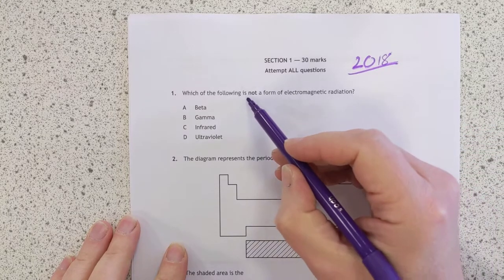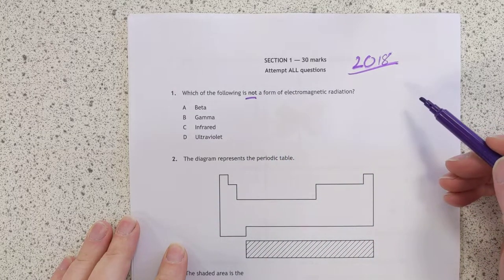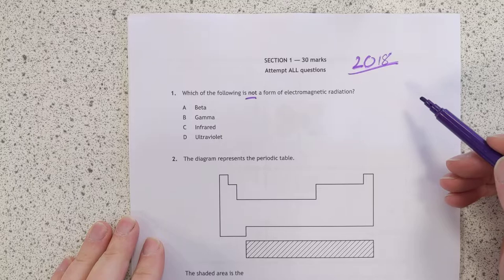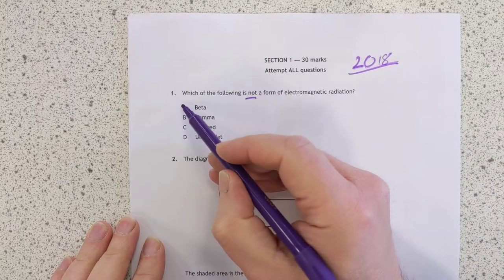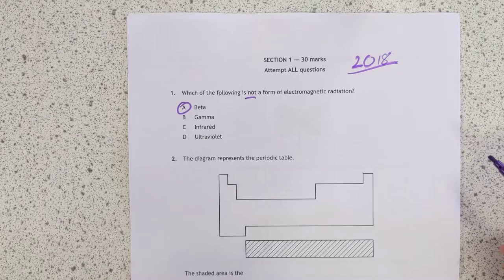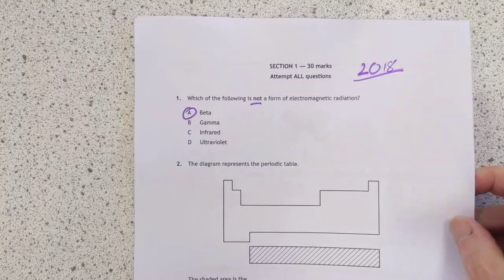Which the following is not a form of electromagnetic radiation? Interesting question, sort of harks back to National 5, and the answer is A, it's beta particles. That's an unusual question to start with.